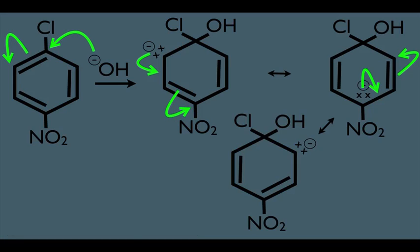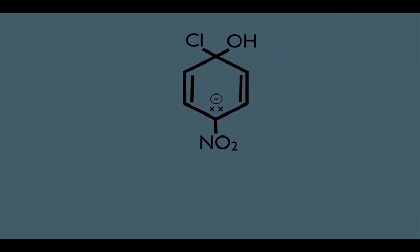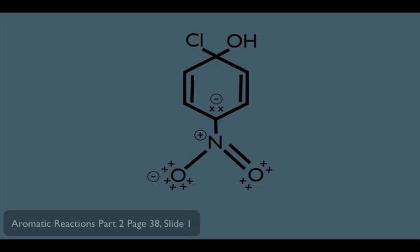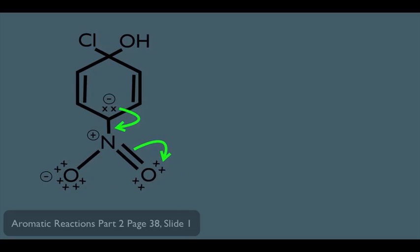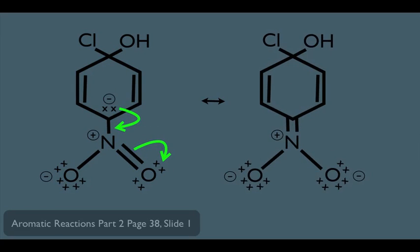There's something unique about the second resonance structure. If we expand the NO2 group into its true Lewis dot form — remember, NO2 groups are electron withdrawing, pulling electrons away from the ring both inductively and through resonance — we can draw an additional resonance structure where electrons fall toward the nitrogen and pi electrons jump up on the oxygen. This means the NO2 group is adding stability to the intermediate and helping this reaction proceed.